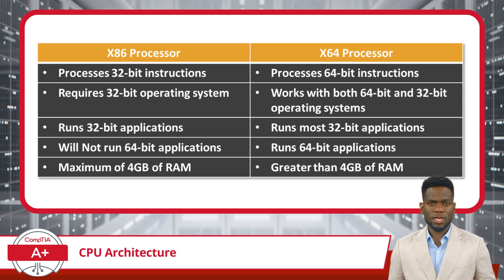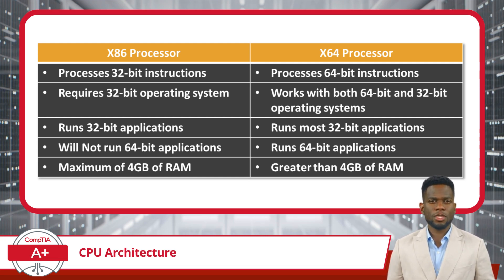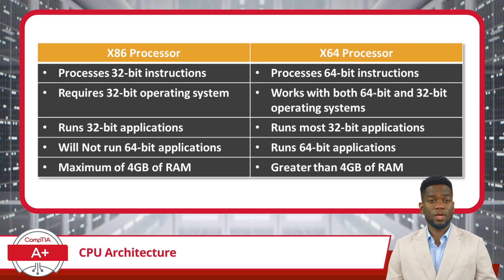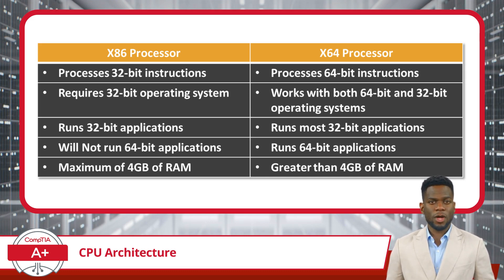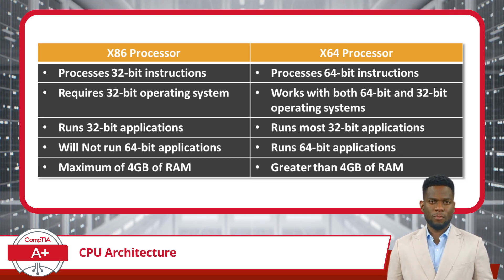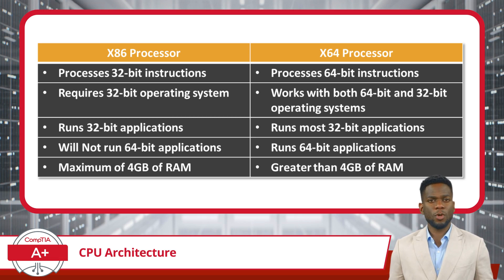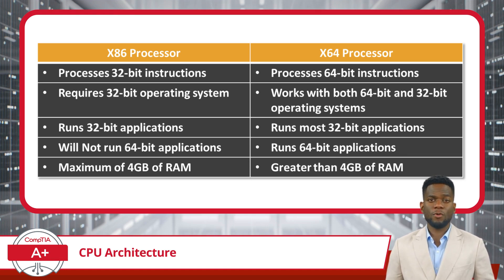Now that you understand the X86 and X64 designations, let's take a closer look at the difference between 32-bit and 64-bit CPUs. 32-bit CPUs support instructions that are 32-bits in size, and 64-bit CPUs are designed to handle 64-bit instructions. This has a trickle-down effect. First up is the operating system: a 32-bit processor is compatible with a 32-bit operating system, while a 64-bit processor is compatible with both 64-bit and 32-bit operating systems. This trickles down further, with the same arrangement holding true for applications — a 32-bit operating system can run 32-bit applications, while a 64-bit operating system can run 64-bit applications and most 32-bit applications.